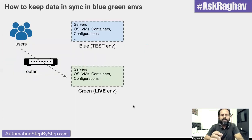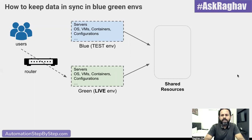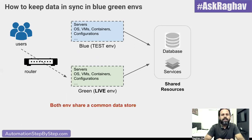A very important thing in blue-green deployment is keeping data in sync between the two environments. For example, just at the time of switching, if some user was using the application and completed a transaction saved in the database, after switching the database should be in the same state. To achieve this, we use shared resources — both environments share databases and services so that data stays in sync between these environments.